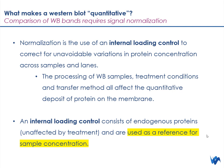So if you are wanting to change your qualitative western blots into a quantitative western blot, what is the first step? The first thing you need to integrate into your workflow is normalization. Normalization is the use of an internal control in order to correct for some unavoidable variations in your protein concentration across your samples and across your lanes. These can often be due to the processing of your samples.